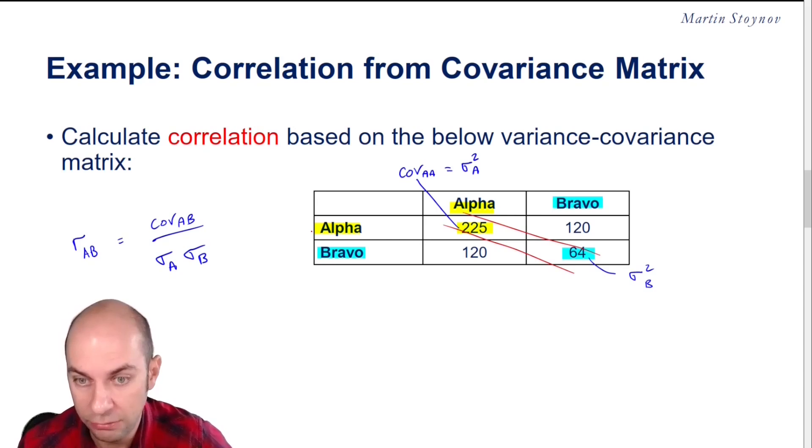Because that diagonal is showing you the covariances of assets versus themselves. So that's going to be the leading diagonal of your variances.